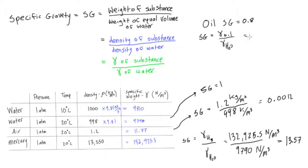So bring this up and we will have 9790, this is newtons per meter cubed, times SG, which is 0.8. And we'll get our specific weight of our oil to be 7832 newtons per meters cubed. Alright.